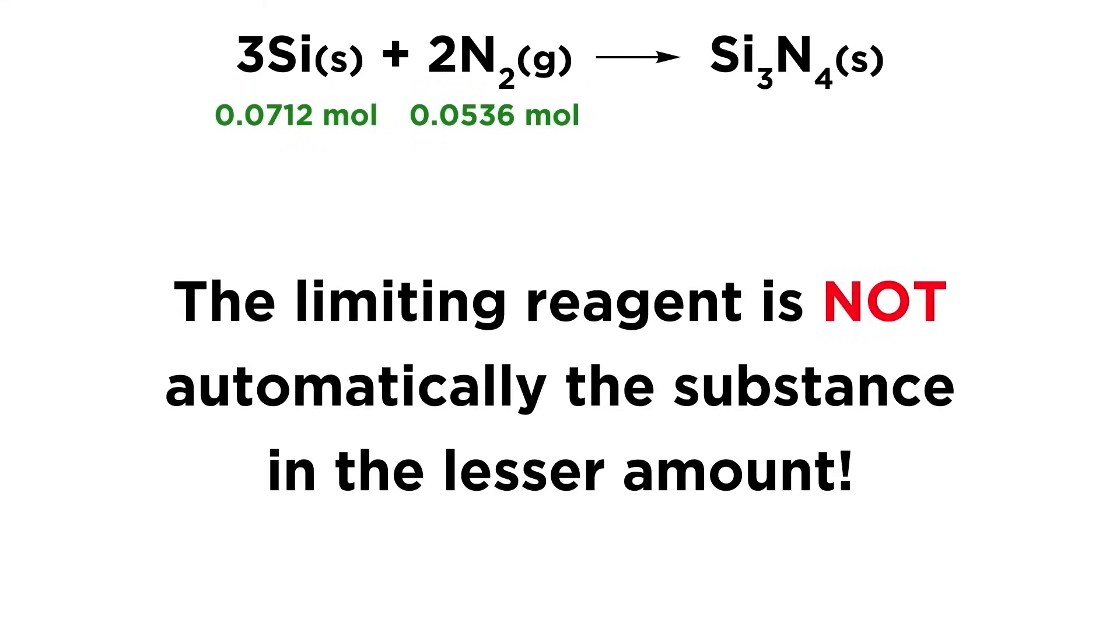Now be sure to remember what we learned with the cheese sandwiches. The limiting reagent is not automatically the substance present in the lesser amount. An extremely common error would be to look at these values and say that nitrogen is the limiting reagent, because there is less of it. But this may or may not be the case. We must do some stoichiometric calculations to find out.